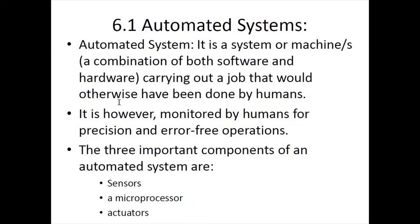Automated systems are monitored by humans — managers, supervisors, operators, or more often observers — for precision and error-free operations, because these systems cannot make their own decisions. Some overseers must be present to ensure they work without errors. The three important components of an automated system are sensors, a microprocessor, and actuators.